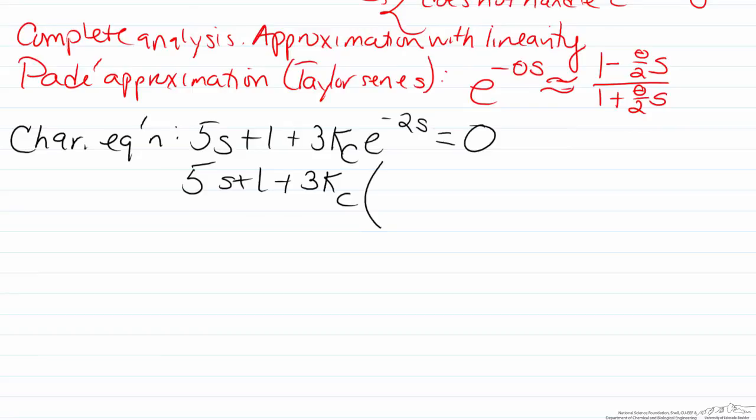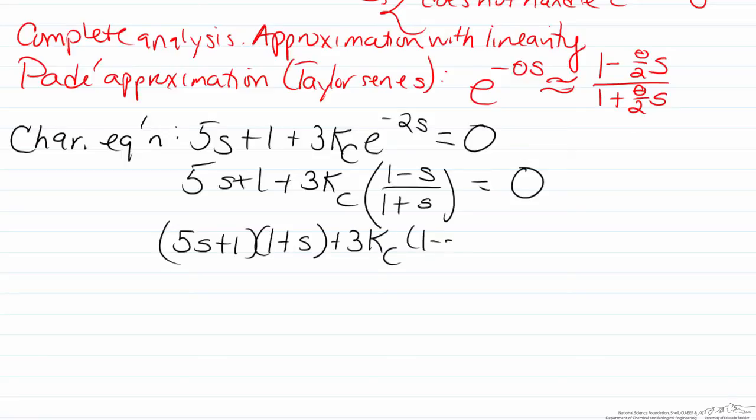so we will be left with 1 minus 2 over 2 times s, so that will be 1 minus s, over theta over 2 in the denominator, 1 plus s equals 0. We now need to find a least common denominator which is 1 plus s, so we will multiply the 5s plus 1 part by this 1 plus s, and then we will be just left with 3Kc times 1 minus s, this will all equal 0,